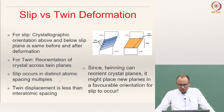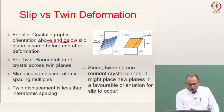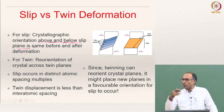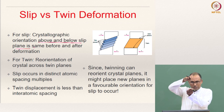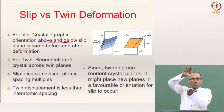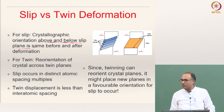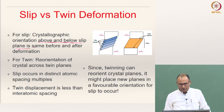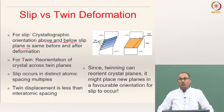Comparing slip versus twinning: in slip, the crystallographic orientation above and below the slip plane remains the same before and after deformation. But in twinning, the reorientation of crystals occurs — the orientation across the twin boundary is altered.